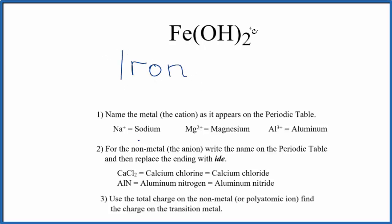Next, we write the name for the group of nonmetals, the polyatomic ion here. So you've either memorized that OH is the hydroxide ion, or if you're allowed, you can look it up. So we have the hydroxide ion.